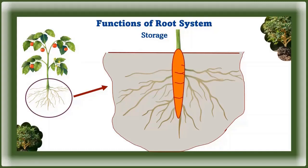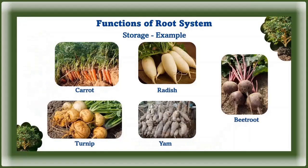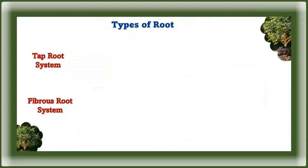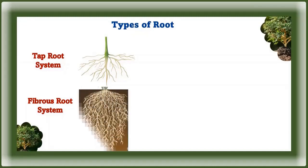Prominent examples of storage roots include carrot, radish, beetroot, turnip, and yam. Root systems are mainly of two types: taproot, which has a main root larger and growing faster than branch roots, and fibrous roots, where all roots are about the same size.